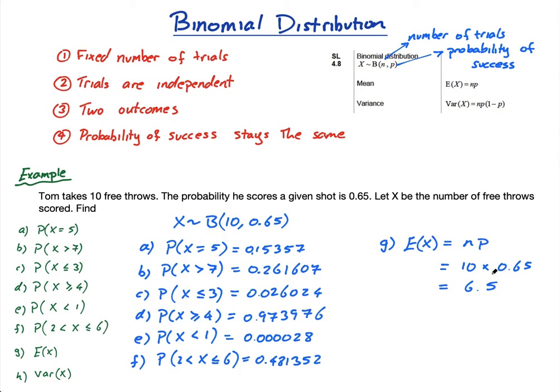Don't round 6.5 to 6 or 7 — the expected value is 6.5 even though you can't actually score half a shot. The expected value is the mean, and remember a mean doesn't have to be a whole number — just like the mean number of siblings can be 2.478 even though you can't have 0.478 of a sibling.